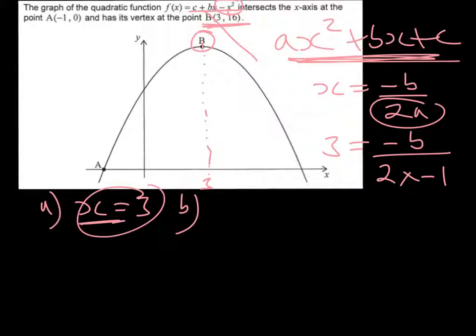If we multiply both sides by -2, we end up with -6 = -b, and therefore we can deduce from that that b must equal 6.